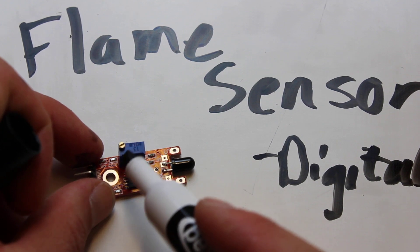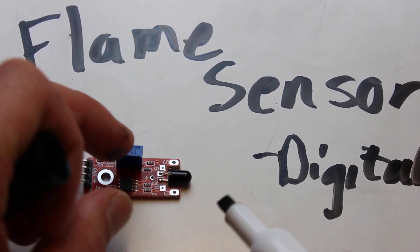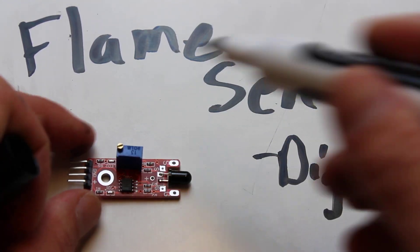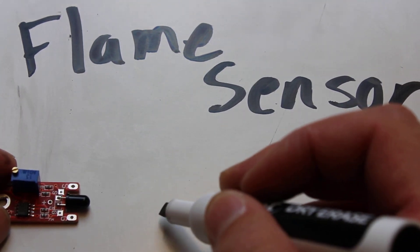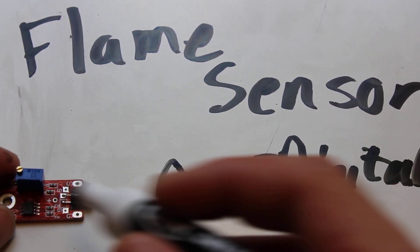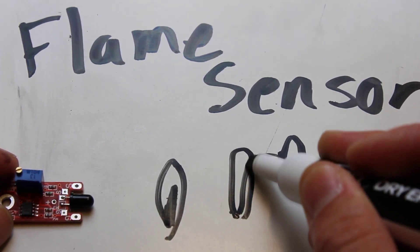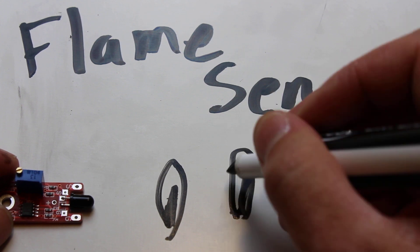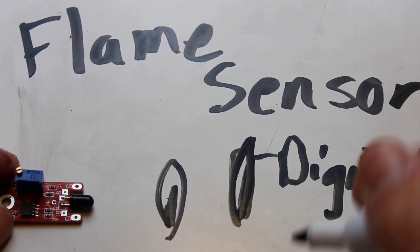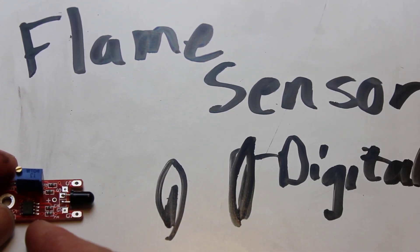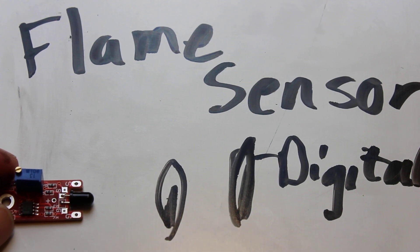That potentiometer - this blue box right here - is for varying the range. Do you detect a flame right here, or can you detect a flame further out by adjusting the potentiometer and changing the distance? That potentiometer changes the range at which you detect flame.